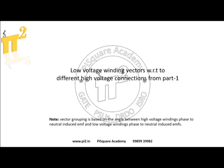Now in this lecture we will see, for those different high voltage connections, if we include the low voltage winding also, then how the phase angle will be. That is what vector grouping is — it is based on the angle between the high voltage winding's phase-to-neutral induced EMF and the low voltage winding's phase-to-neutral induced EMF.